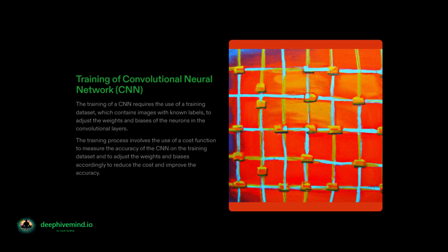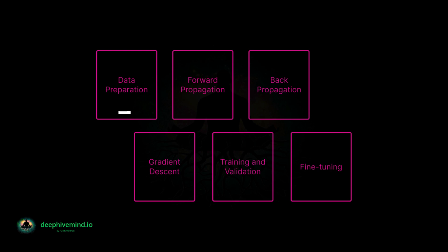The training process of a convolutional neural network involves adjusting the weights and biases of the neurons in the network to minimize the error between the network's predictions and the actual labels of the input data. Data preparation: the first step in training a CNN is to prepare the training data. This typically involves resizing the images to a standard size, normalizing the pixel values, and splitting the data into training and validation sets.